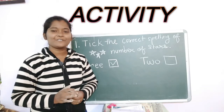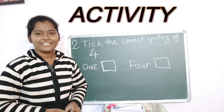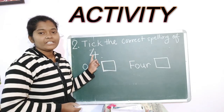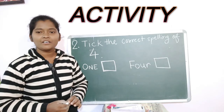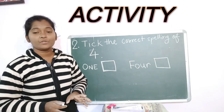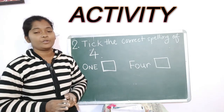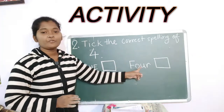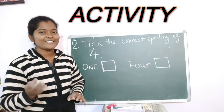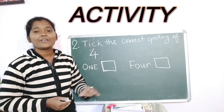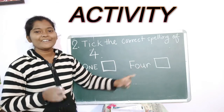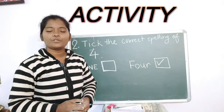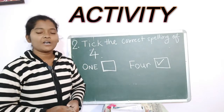Let's see the next question. Tick the correct spelling of number 4. Which number is this? Number 4. So you have to pick the correct spelling of number 4. The options are O-N-E and F-O-U-R. Children, say the correct spelling of 4: F-O-U-R — 4. Very good. So you have to select the correct spelling of 4, that is F-O-U-R — 4.